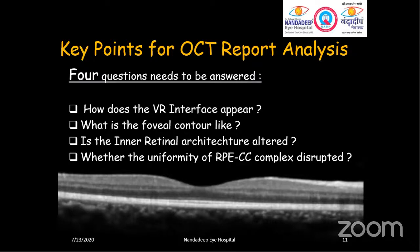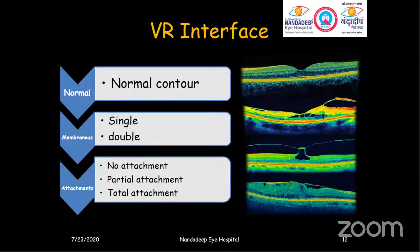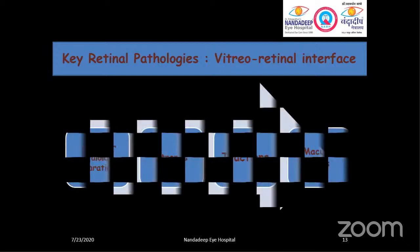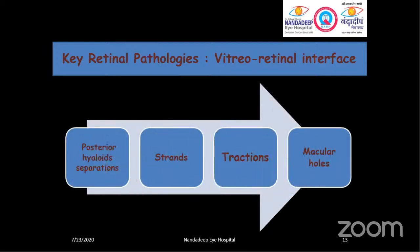Let's go through the details one by one, starting with the vitreo-retinal interface. What may be the possibilities? It may be normal as shown in the picture. It may have membranous changes, which may be single or double. It may have attachment — no attachment, partial attachment, or complete attachment. Key retinal pathologies detectable at the vitreo-retinal interface include posterior hyaloid separation, membranous tractions, tractional detachment, and macular holes.